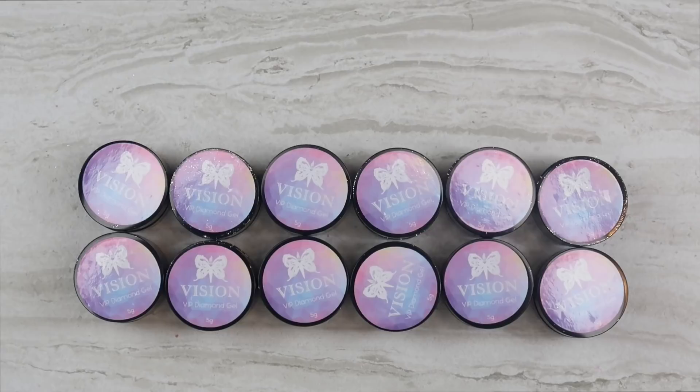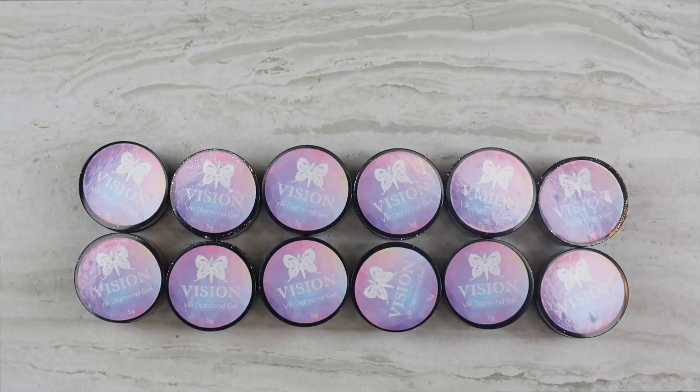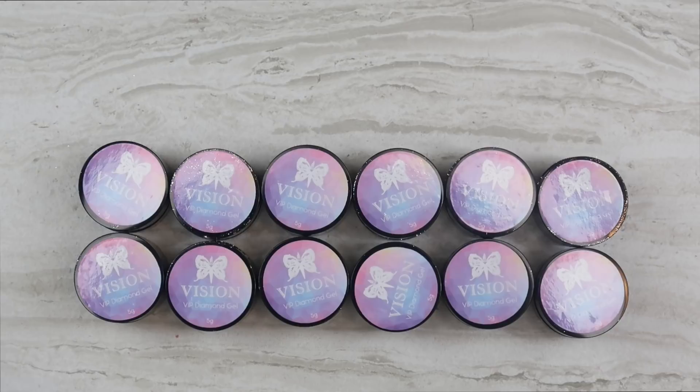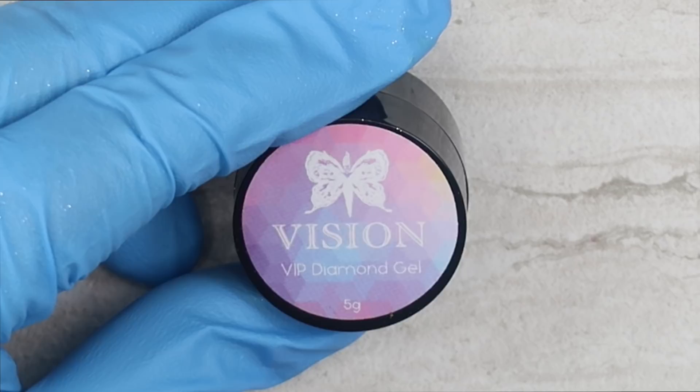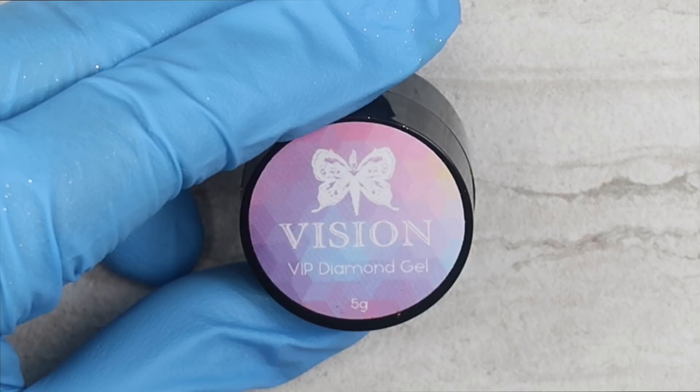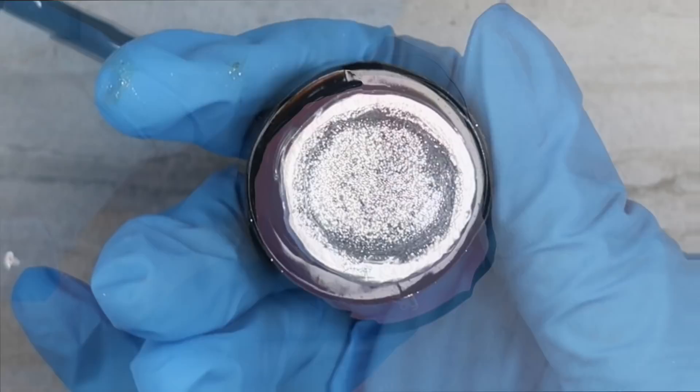Okay, so Vision Gel has come out with 12 brand new VIP Diamond Gels. I obviously have taken a look at them, but you guys know me, it's still going to be a surprise when I open these up. We're going to jump right into this and start with number one. Look at this label, I absolutely love it. It's like a watercolored mix of pink and purple and blue and yellow. It is so pretty. This is a gorgeous silver and I want you to see how silky this is.